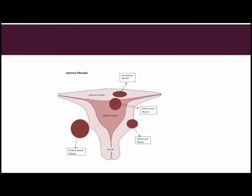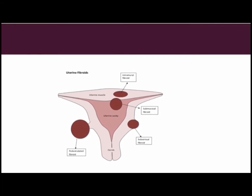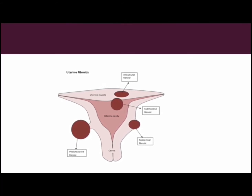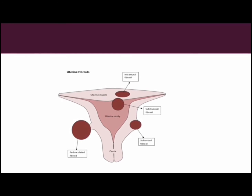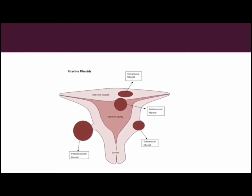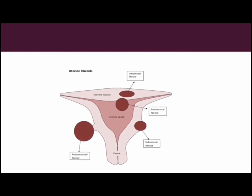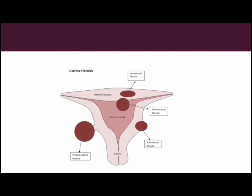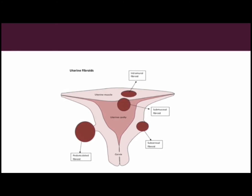We have the subserosal fibroids, located on the outside of the uterus. These fibroids are connected closely to the outside wall of the uterus. And lastly, pedunculated fibroids — the least common type. These fibroids are also located on the outside of the uterus; however, pedunculated fibroids are connected to the uterus with a thin stem. They are often described as mushroom-like because they have a stalk and then a much wider top.